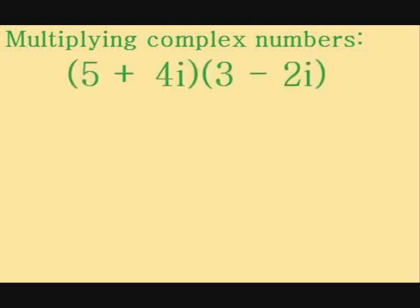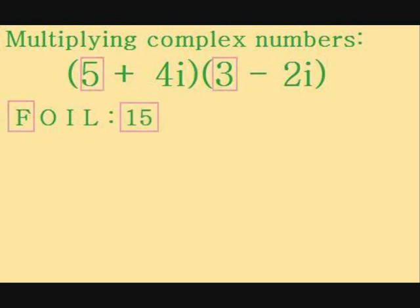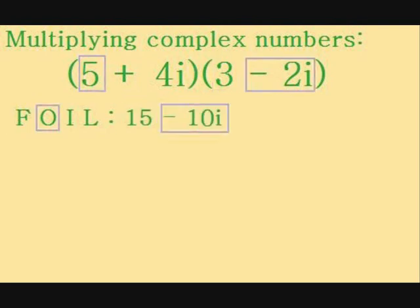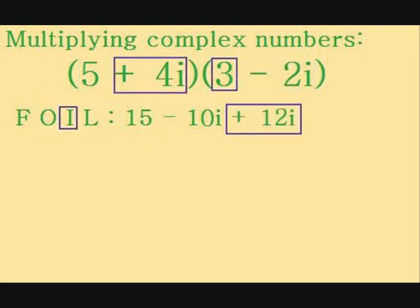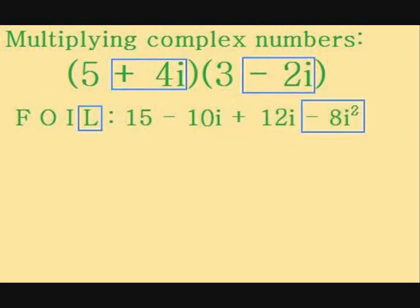We can also multiply complex numbers without needing to learn anything new. Let's multiply 5 plus 4i and 3 minus 2i, our favourite example from before. We do this using the same method that we would use to expand quadratics, the FOIL technique. First, 5 times 3 equals 15. Outside, 5 times minus 2i equals minus 10i. Inside, 3 times 4i equals 12i. Last, 4i times minus 2i equals minus 8i squared.